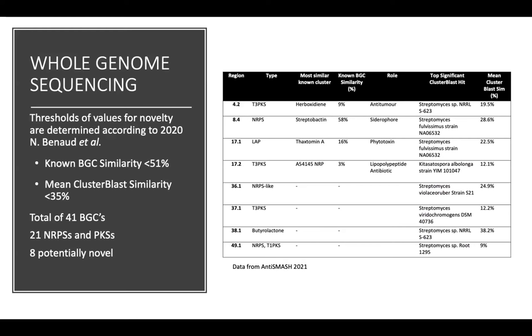On analysis of the genome through antiSMASH and using various thresholds from Bernal-Dato, I was able to identify eight biosynthetic gene clusters that have potential to secrete novel compounds. Overall, 41 biosynthetic gene clusters were identified, of those 21 were NRPSs and PKSs. NRPSs and PKSs are able to create secondary metabolites in response to stressful conditions, and these are widely used as drugs today.